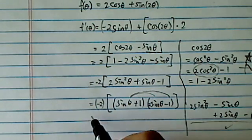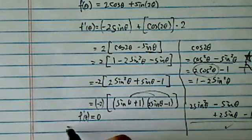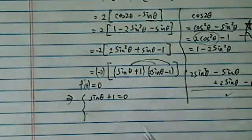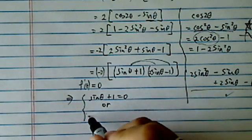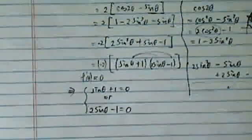Check mark. So now setting this one equal to zero, we have two equations. We have sine theta plus one equal to zero. It's one of them. Or we could have twice of sine theta minus one equal to zero.